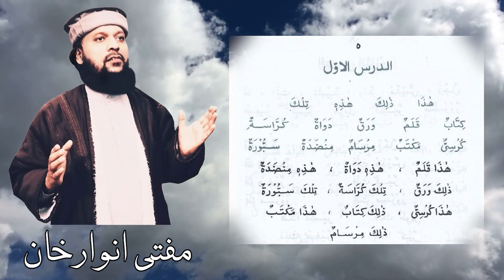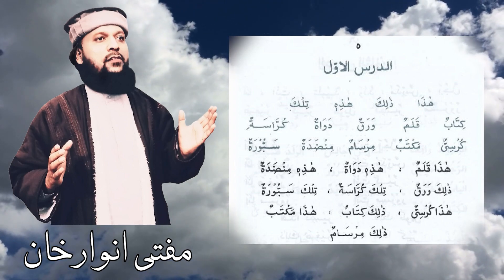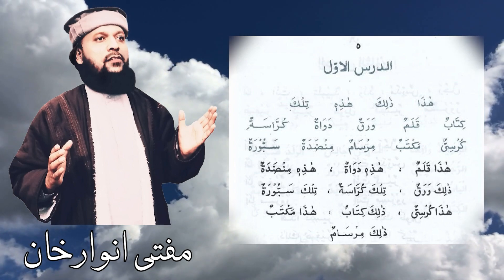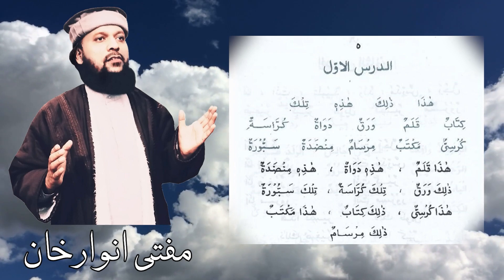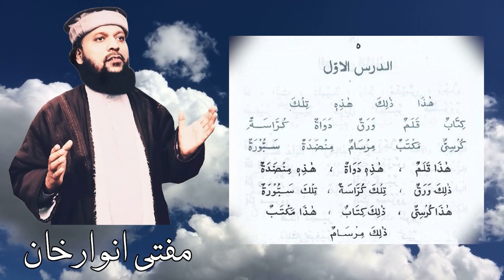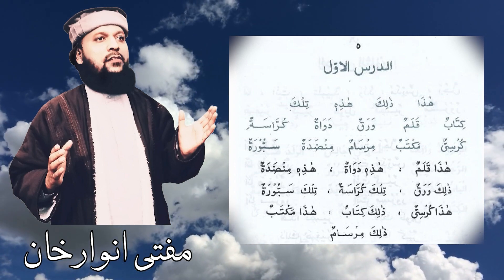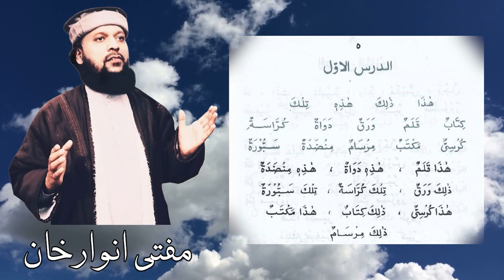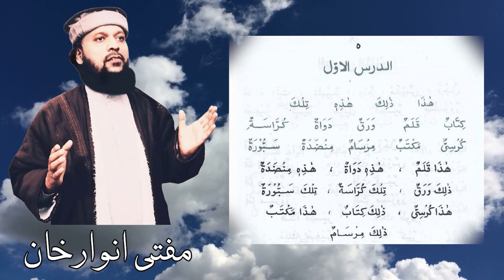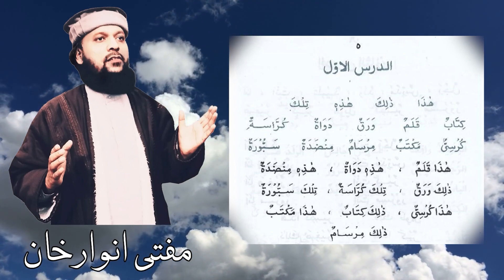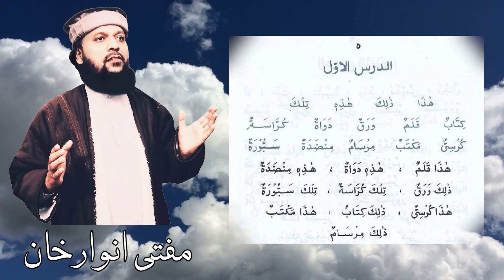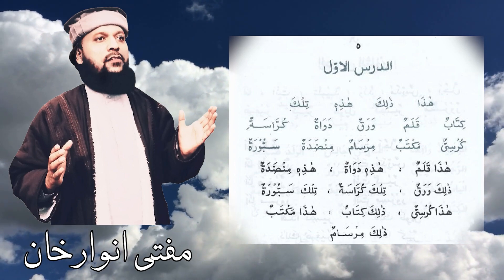These were individual words. Now he gives complete sentences — Al-Jumalul-Ismiya composed with Ismul-Ishara and Musharun-Ileh. Hadha kalamun: This is a pen. Hadhi davatun: This is an ink pot. Hadhi minzatun: This is a desk. Dhalika varakun: That is a paper. Tilka kurrasatun: That is a notebook. Tilka sabburatun: That is a blackboard. Hadha kursiyun: This is a chair. Dhalika kitabun: That is a book. Hadha maktabun: This is a table. Dhalika mirsamun: That is a pencil.